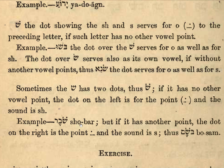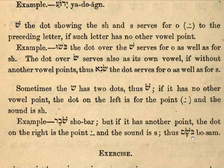Ignore the anglicized pronunciation — English has shifted since this book was written, so it's not really helpful. But if the Shin has another point, the dot on the right is the point. As you can see, there is indeed a vowel underneath the shin. The part that does not have a vowel underneath requires one, so the invisible vav provides it — with the invisible vowel between the bet and the shin.